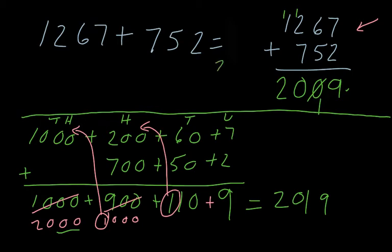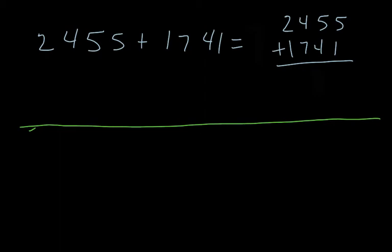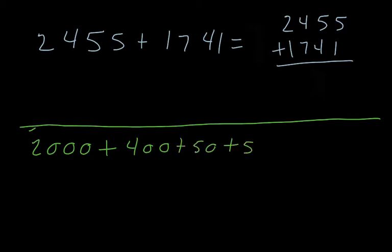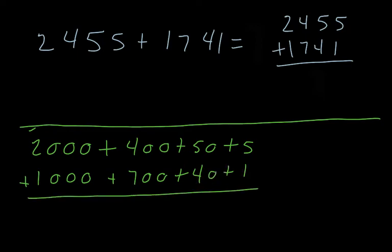It's always a good idea to double-check your work because it happens to the best of us. Now we're going to be partitioning two thousand four hundred and fifty-five, add one thousand seven hundred and forty-one. So we write 2000 plus 400 plus 50 plus 5, and we're adding that to 1000 plus 700 plus 40 plus 1. Units, tens, hundreds, thousands: five plus one is six, fifty plus forty is ninety.